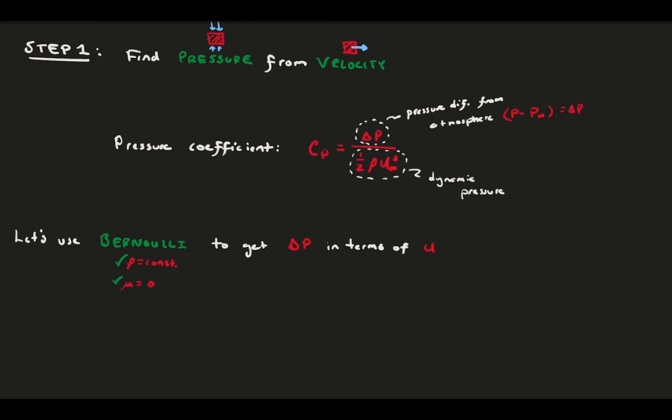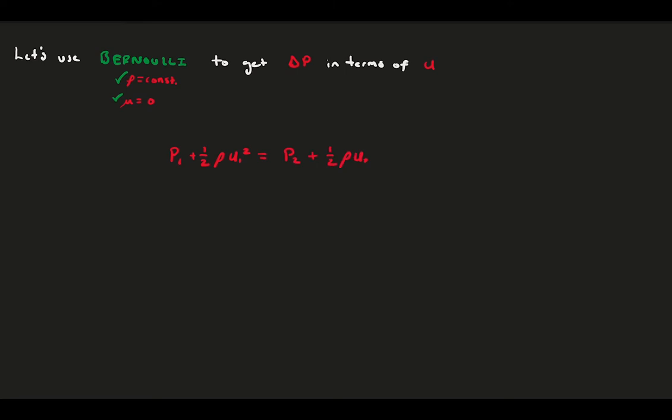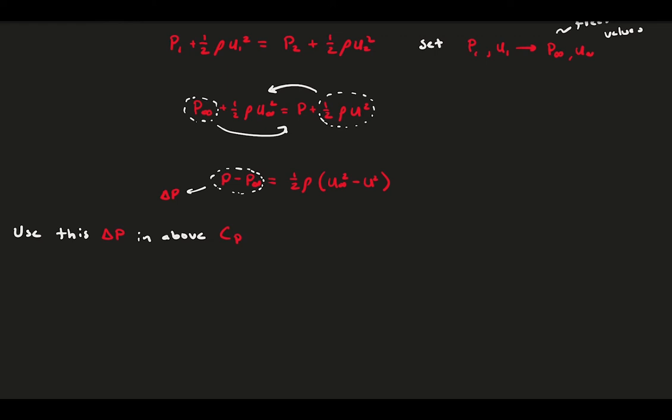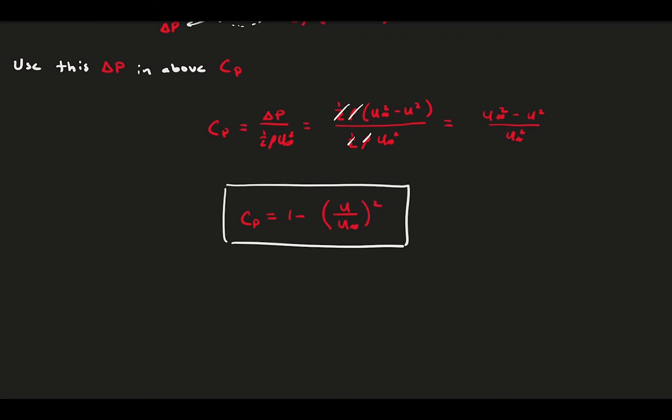So write out the Bernoulli equation between two points on a streamline. Point 1 we will take to be far from the foil, so the freestream quantities denoted by the subscript infinity will be used. And with some rearrangement, we can set the difference in pressure, delta p, equal to a function of the flow density and velocity difference. Let's plug this back into our definition of the pressure coefficient, do some simplification, and we find we can define the pressure coefficient from velocity alone.